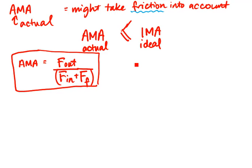Now if there's no friction, then the force of friction equals zero. So if force of friction is zero, then AMA is equal to F out over F in. So let's look at one example with no friction.